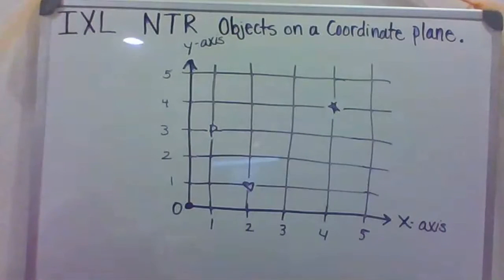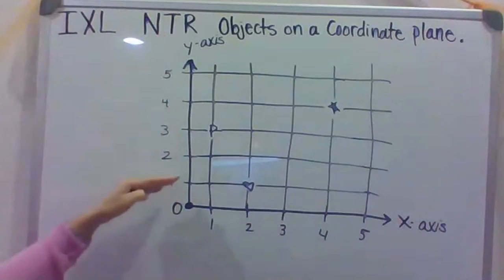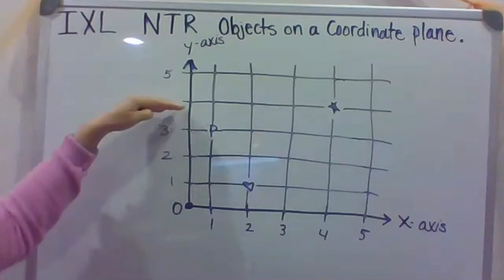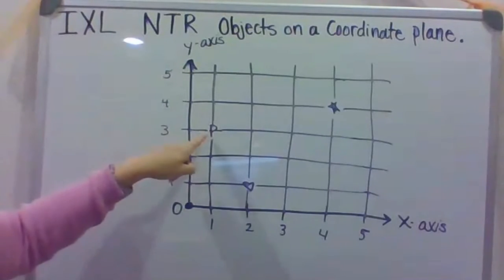All right. So they might ask you, what is the Y coordinate of the P? So what is the Y coordinate of P? Well, we know this is the X. So we need to go to Y and say, okay, well, if this is Y, where does the letter P fall? Is it at 1, 2, 3, 4, or 5? So on this Y axis, where is it at? It's at 3. You see that it lines up with 3?